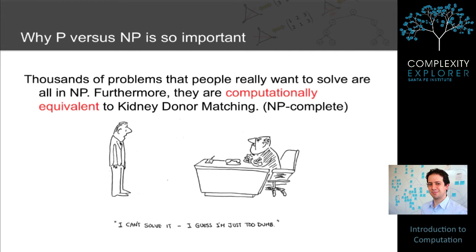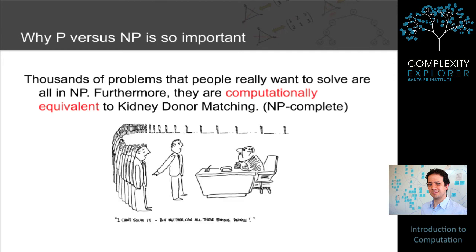This transforms the situation from throwing up your hands and saying 'I guess this is just a hard problem,' to being able to say 'this problem is NP-complete.' That means not only can I not solve it, but neither can all the thousands of other people who have worked not only on this problem but on any NP-complete problem — including many famous mathematicians and computer scientists.